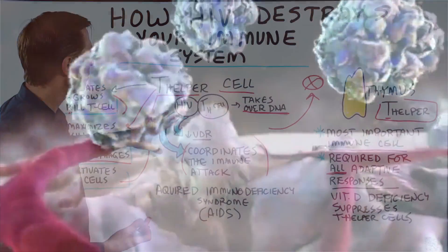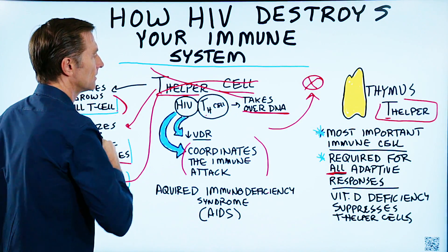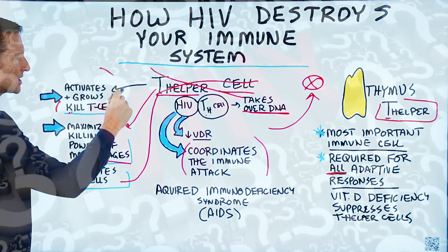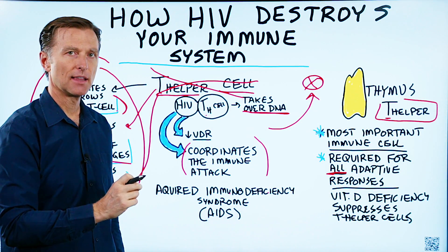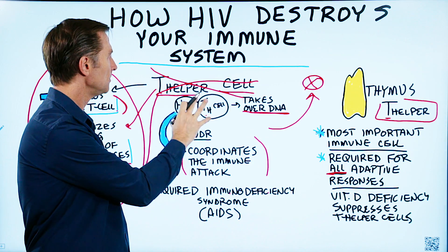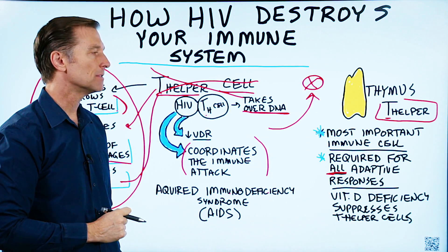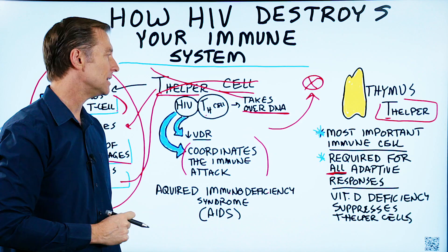If you wipe out the T helper cell, you don't get any of these actions. Why am I talking about this? Well, one reason is that there is a nutrient that can keep these cells strong, and if this nutrient is deficient, they are inhibited.